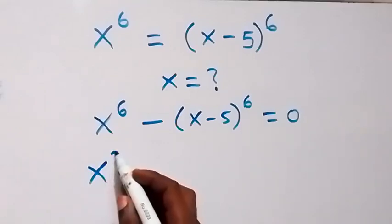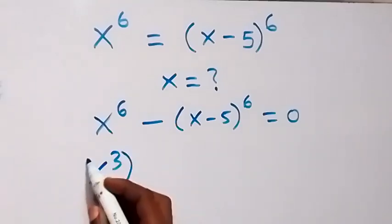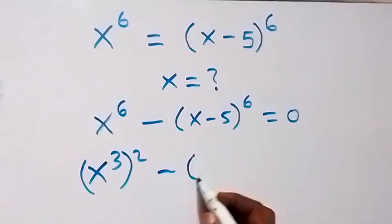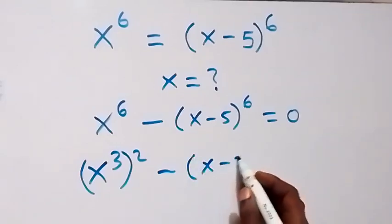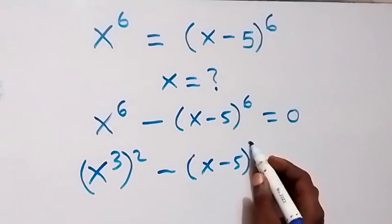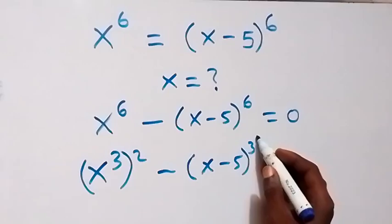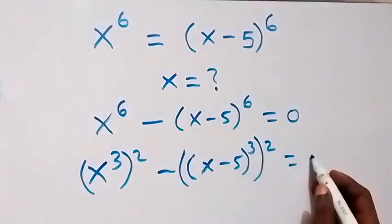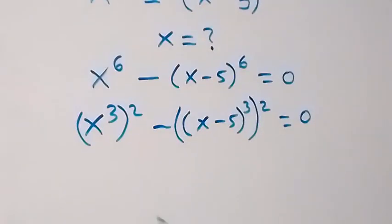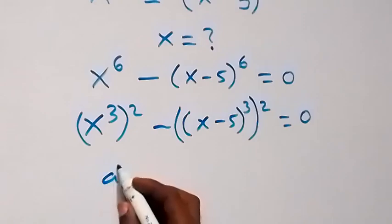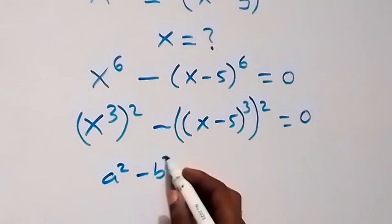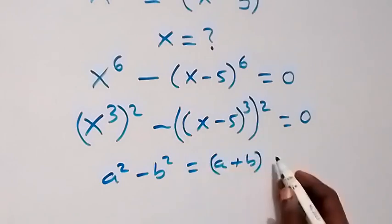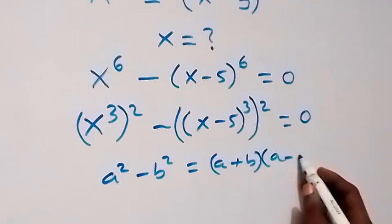Now let's factor this: x raised to power 6 as x raised to power 3, then raised to power 2 — since 2 times 3 gives 6 — then minus the same thing: x minus 5, raised to power 3, which is then raised to power 2. This equals 0, and we now apply the difference of two squares. We have a squared minus b squared, which gives us a plus b, into bracket a minus b.